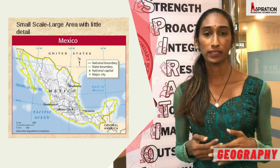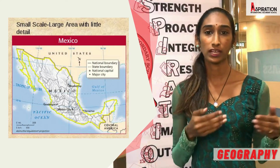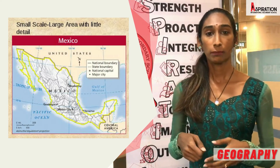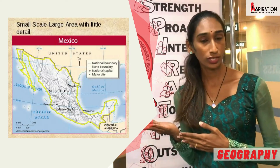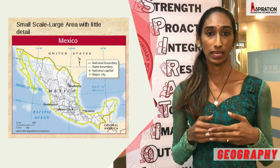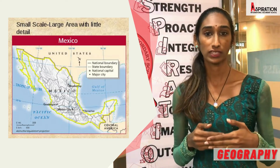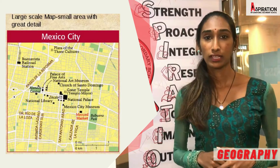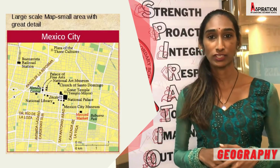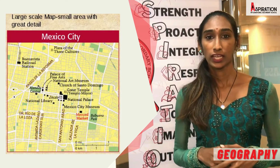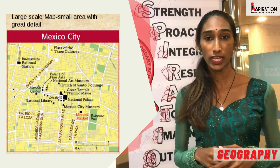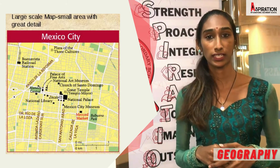To sum up the difference between large scale map and small scale map: the map of Mexico here is a small scale map — it has a large area with little details. This is the map of Mexico City; it is a large scale map and it has a small area with great details.